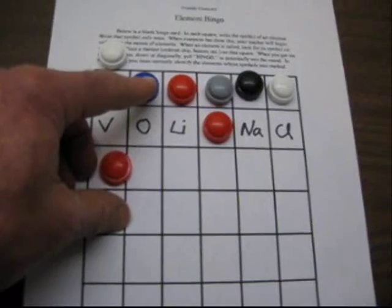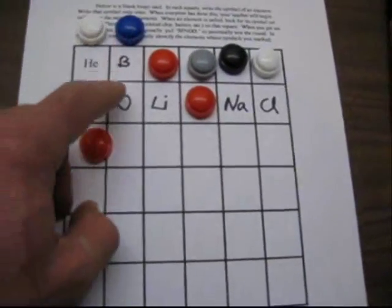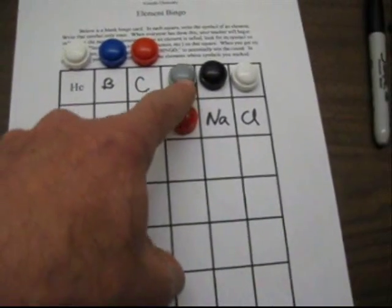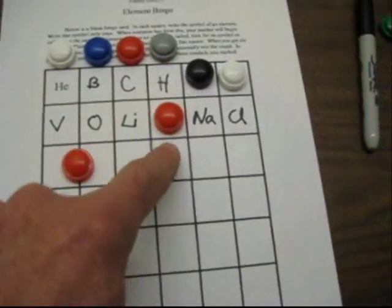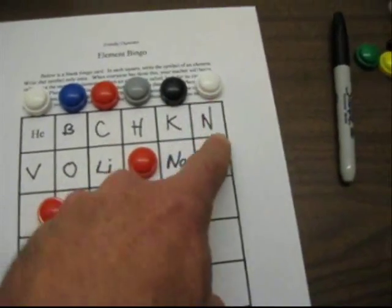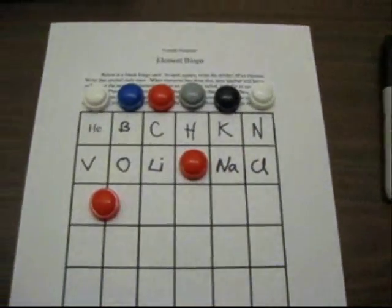And it's important that they give you the symbol and the name. B-boron. And then we'd have C for the carbon. And then H for hydrogen. And this was K for potassium. And then N was for nitrogen.